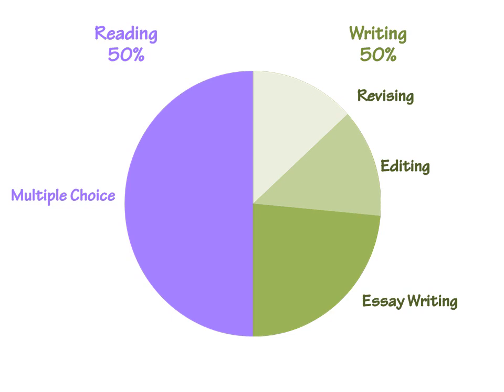If you look at the writing portion of the test, you will see that it is divided into three sections: two sections that are multiple choice and cover revision and editing, and one section that is an essay. Altogether, you see that there are four sections total on the English EOC.